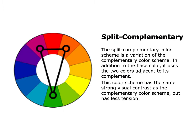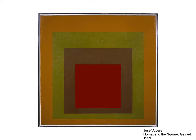Split complementary is another type of color scheme. It tends to have that balance that a triadic does, but with a little unexpected pop — a little bit of clash. An example of a split complementary color scheme would be green plus red-violet and red-orange. Here's an example of a Joseph Albers split complementary color scheme.